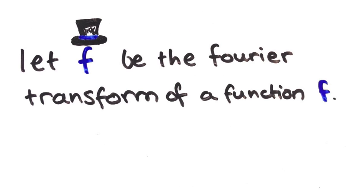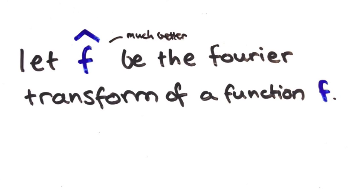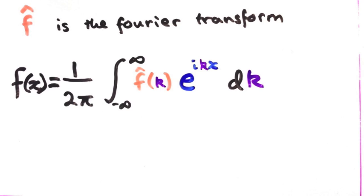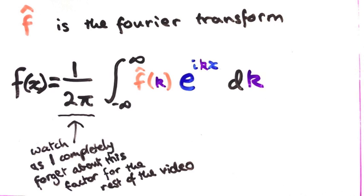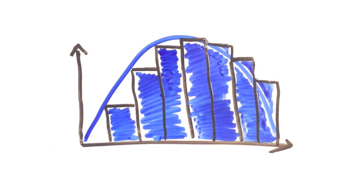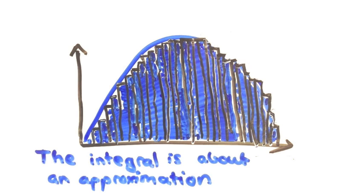Let f̂ be the Fourier transform of a function. To understand it, we're going to have to look at the equation that relates f̂ to its function. Okay, so don't freak out. I know there's an integral there and so it seems difficult, but it's really not. If you've seen my calculus video or you know something about calculus already, then you know that the integral itself is just about an approximation. So, we'll come at it from that kind of angle.